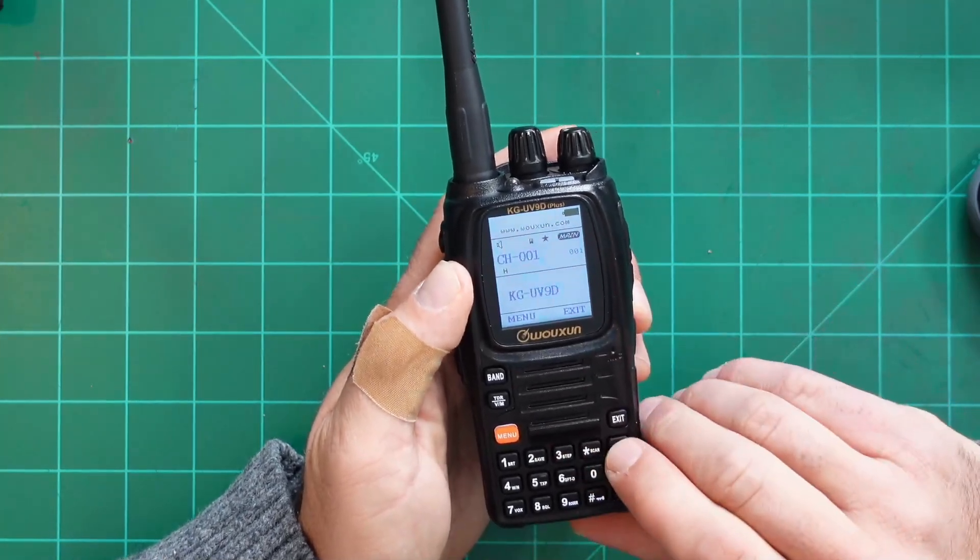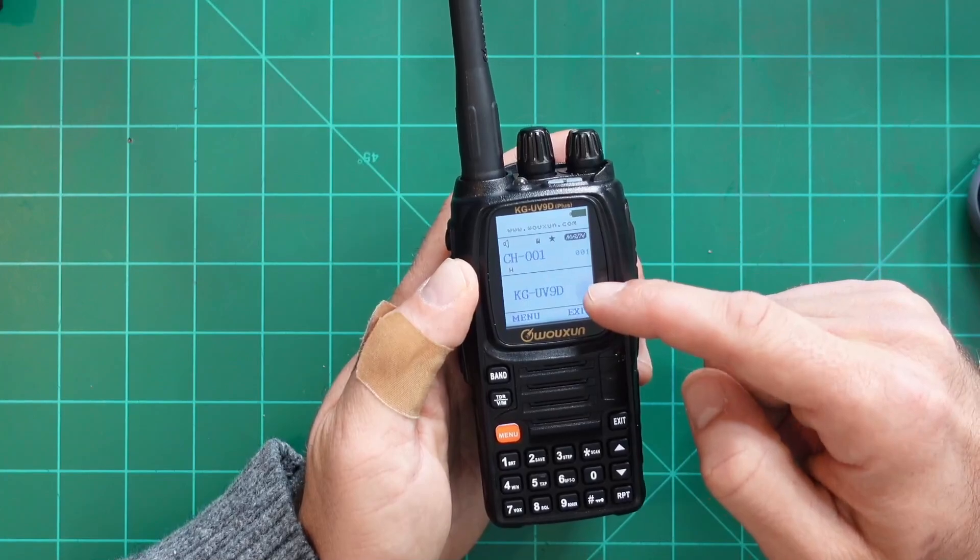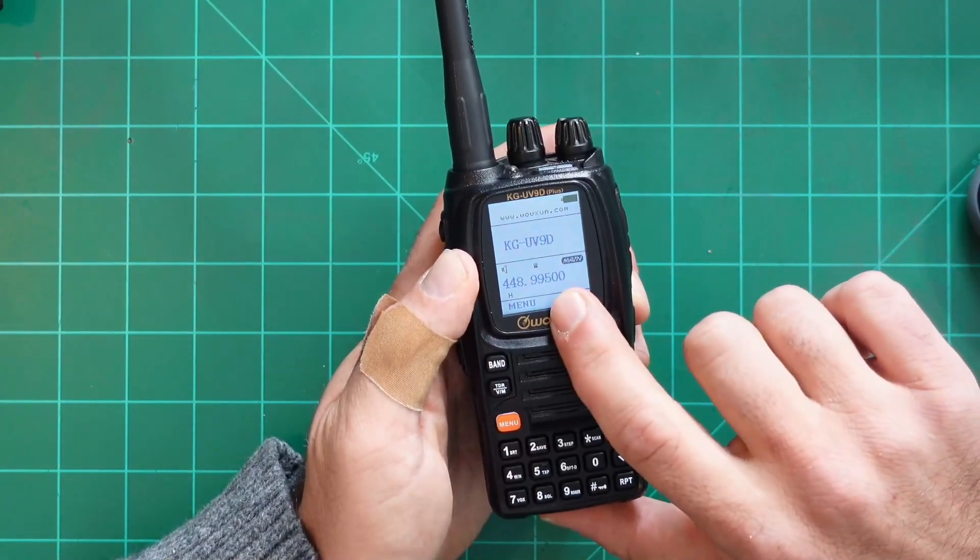After you hold down this button, you can see now we're in memory mode. We're on a main channel right now. But if we wanted to go down to the other channel, all we would have to do at that point is hit the band button. And our main mode becomes right here.